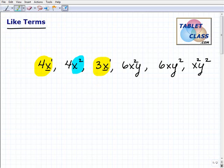All right? Now this one right here, notice I don't really care about the coefficient at all. It has nothing to do with like terms. This has x squared, not x to the first. So this term is not like 4x and 3x.